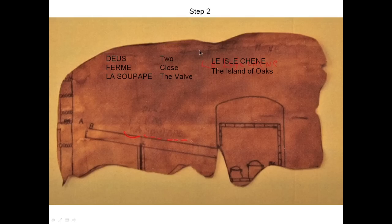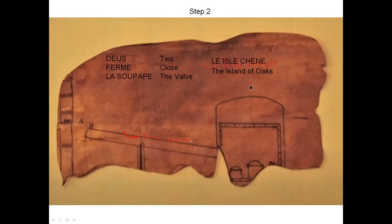Up here it may say 'the Isle of Chena' or 'the Isle of the Oaks' — you can barely see it. You can make out the H, C, E, and N, and definitely an E. This is something skeptics can criticize regarding the name 'Oak Island' and when it became Oak Island, but this is something that also appears on this piece.